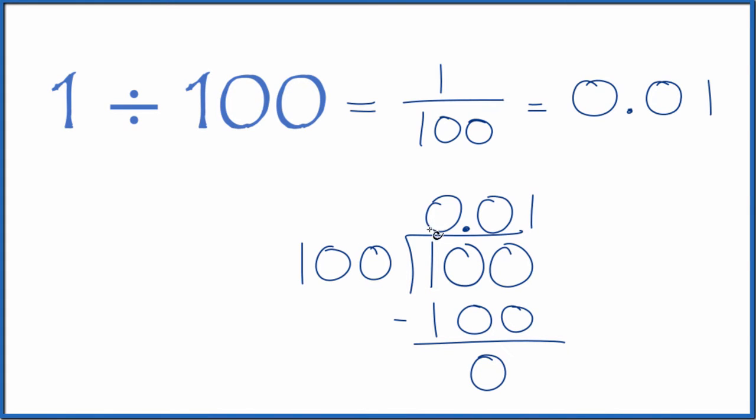So 1 divided by 100 is the decimal 0.01, and that's what we found earlier.